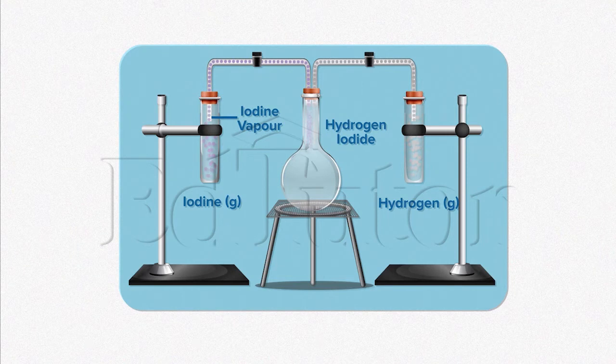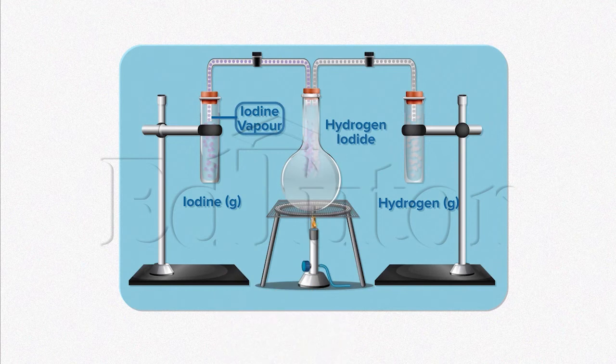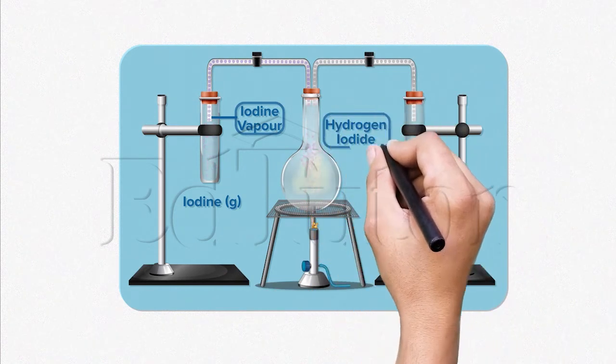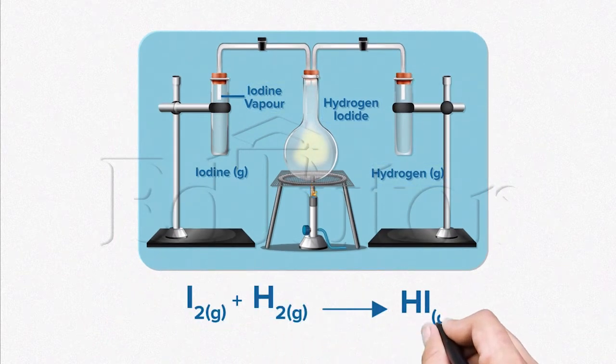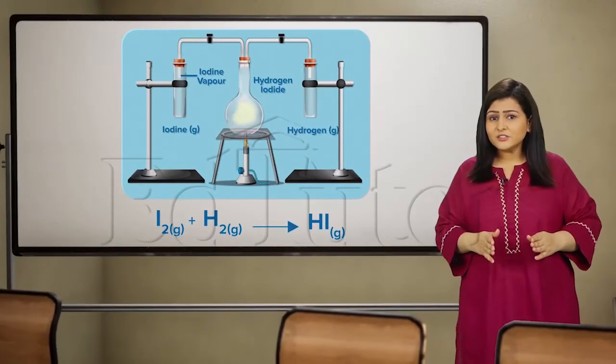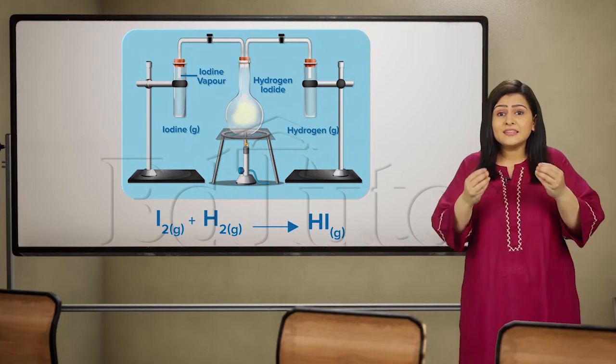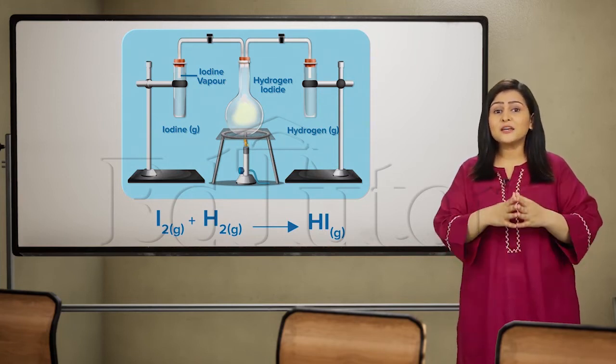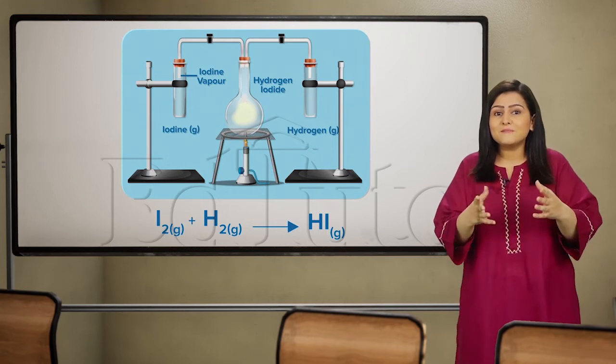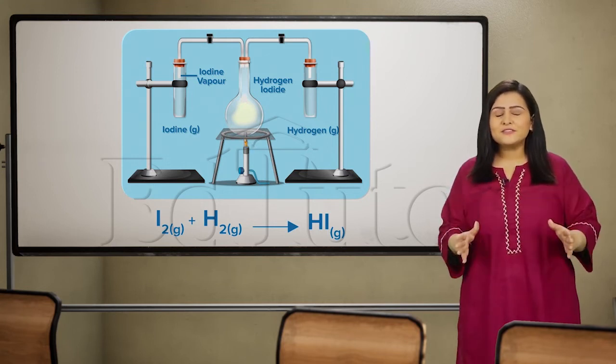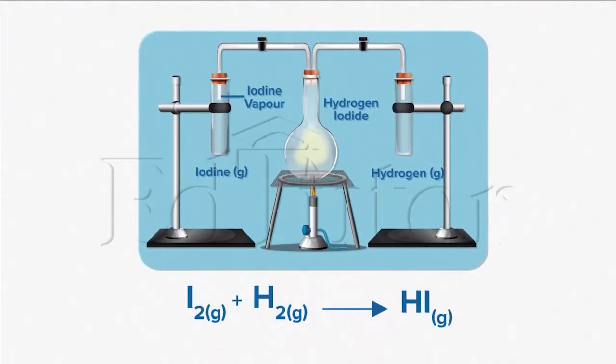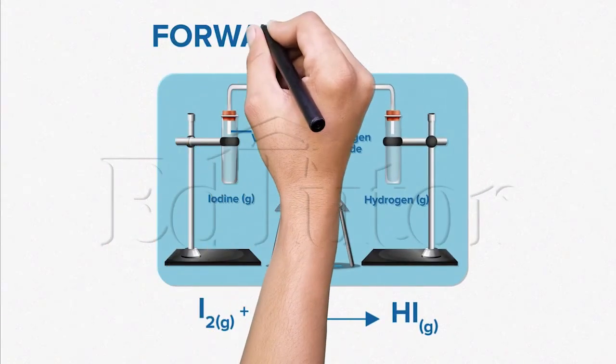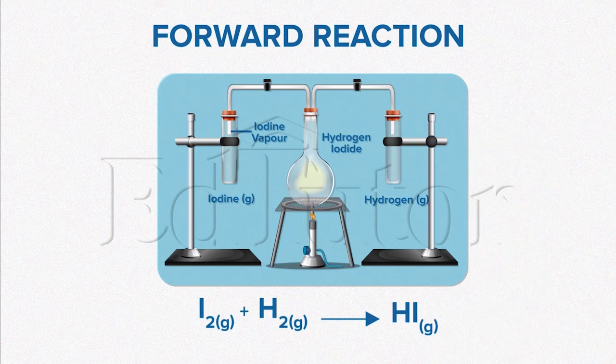This flask will then be heated. The result will show the purple iodine vapor fading as it reacts with hydrogen to form hydrogen iodide. Isn't it exciting to see that when we heat this mixture of gases, we can see color changes because of the formation of a new substance. You will see a lot of this in chemistry. So, remember, this reaction is termed as a forward reaction.